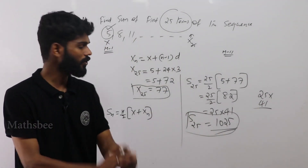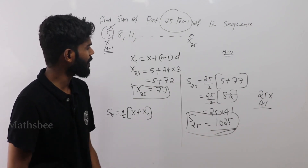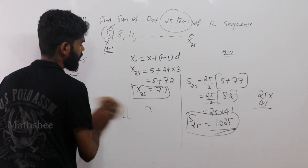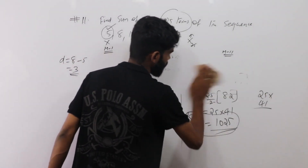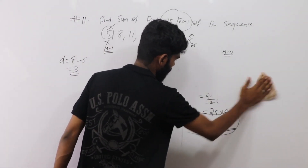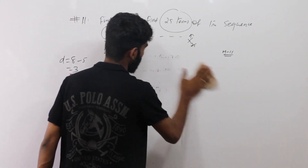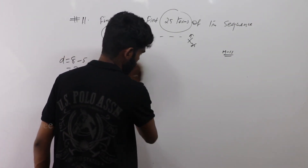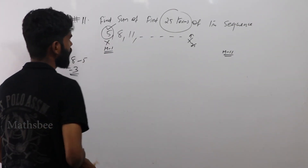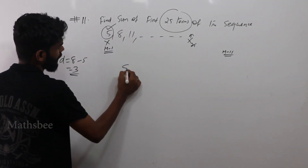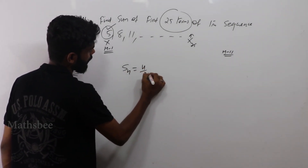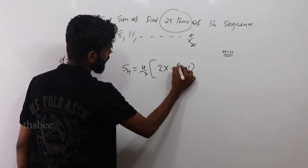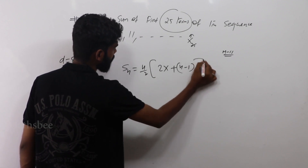This is the direct form — method two. Using the direct formula: Sn = n/2 × [2x + (n − 1) × d].